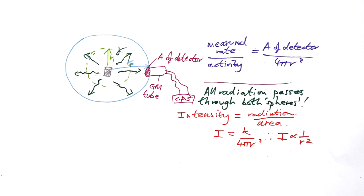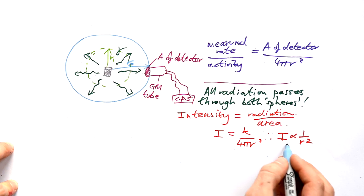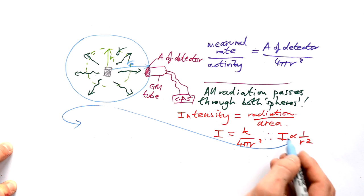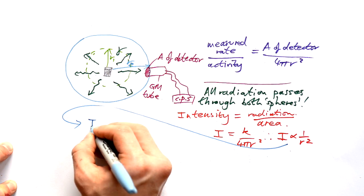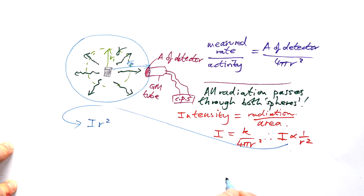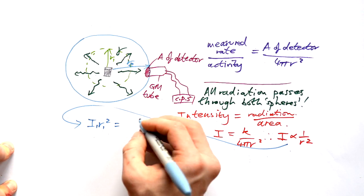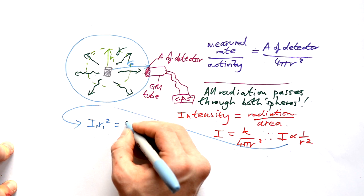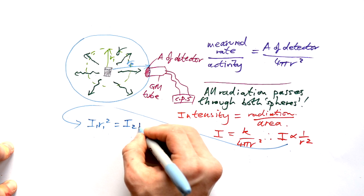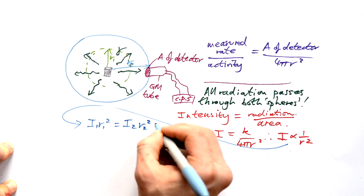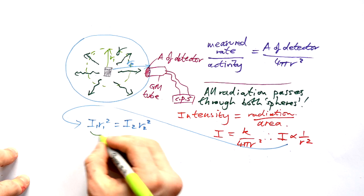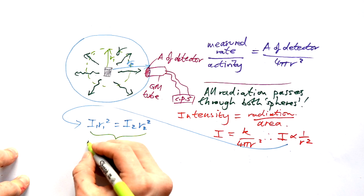Because we know it's going to be the same for both spheres, we can call that a constant k divided by area, and the area of a sphere is 4πr². This means intensity is inversely proportional to the square of the radius — the distance from the source. This is our inverse square law.